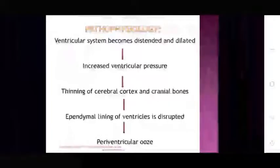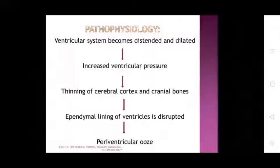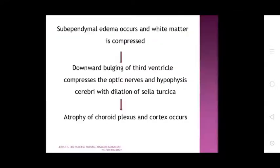Pathophysiology of hydrocephalus: first, the ventricular system becomes distended and dilated, then increased ventricular pressure occurs, followed by thinning of the cerebral cortex and cranial bones. The ependymal lining of ventricles is disturbed, next periventricular ooze and subependymal edema occur with white matter compressed. Downward bulging of the third ventricle compresses the optic nerves and hypothalamus. Cerebral dilation, atrophy of choroid plexus and cortex also occurs.